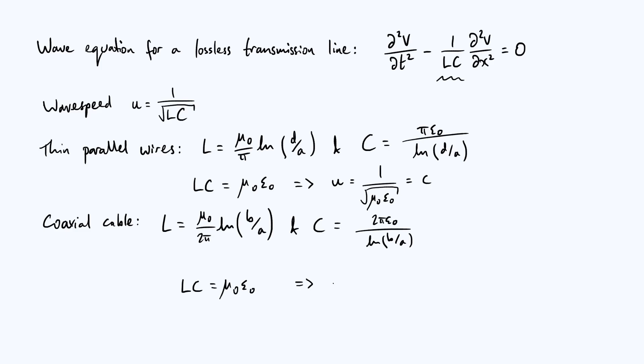And for a coaxial cable, again assuming there's no resistance, assuming that the conductor is separated by a vacuum, you get that u is equal to c again.